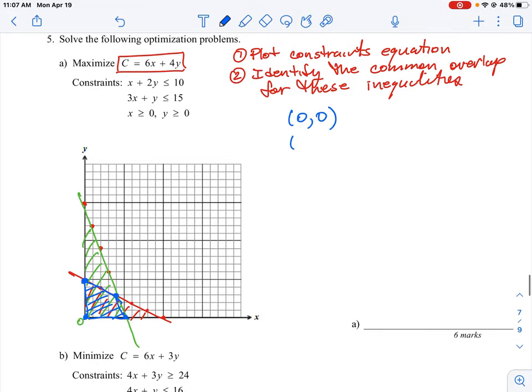The next point we have is zero comma five, that's five units up the y axis, then we have five comma zero. So that's the point right here on the x axis. And then we have this point where the two lines intersect, which is actually four, three. So those are our coordinates that we want to maximize.